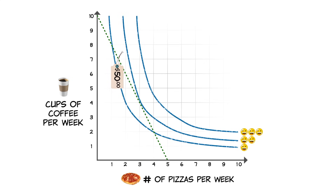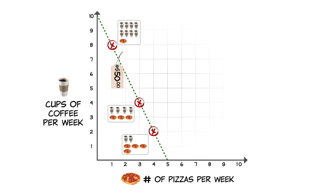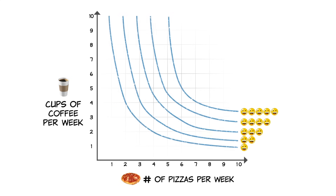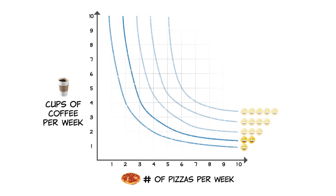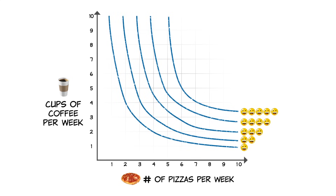This means that your optimal consumption combination is on your budget line. Making the best choice you can afford also means that you will try to reach the indifference curve that represents the highest degree of satisfaction or utility. Because pizza and coffee are good things — things that make you happy — this will occur on the indifference curve that is the farthest away from the origin.